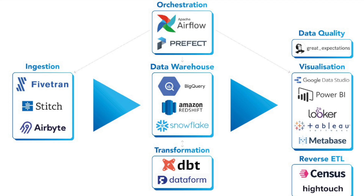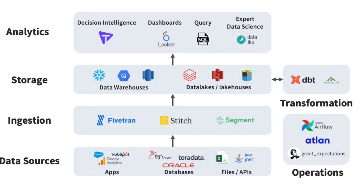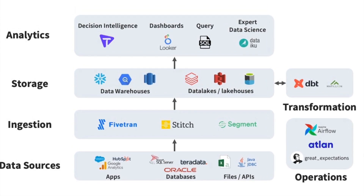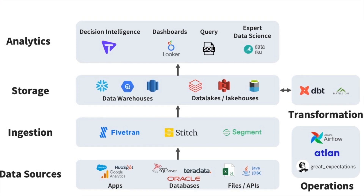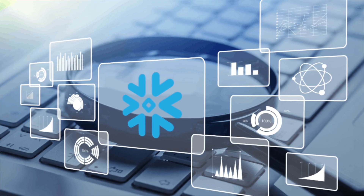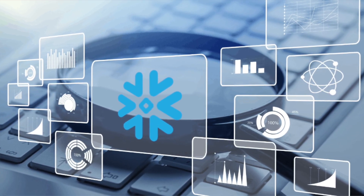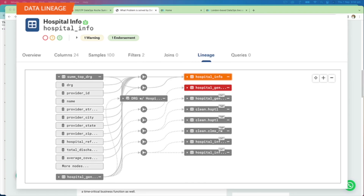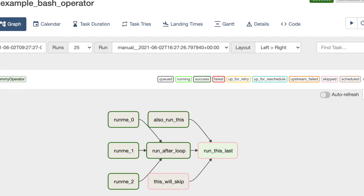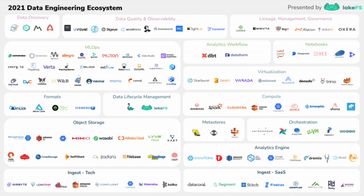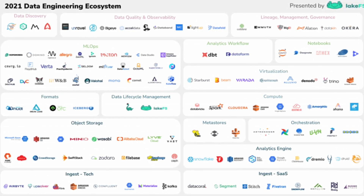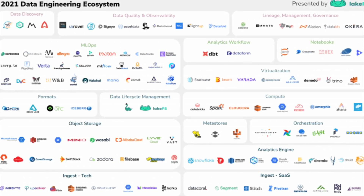We could have event streaming data, micro batches, and more traditional batch processes all loading data onto Snowflake. Those same customers need to consider: do we use a data loader like Fivetran or Matillion's data loader tool to get data onto Snowflake and then trigger transformations using something like dbt? Or do we use a more traditional ETL tool — or ELT as we now call it — like Matillion's ETL product? Then we need to govern that data using tools like Alation or Atlan, orchestrate with Airflow, and serve consumers via Power BI, Tableau, Looker, DataIQ, or DataRobot for AI/ML use cases.